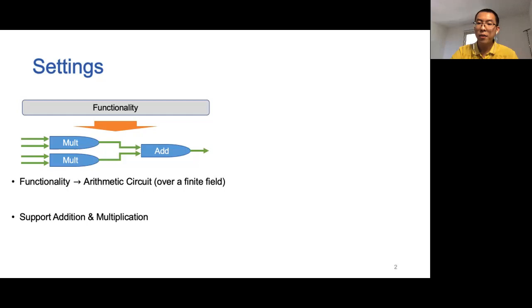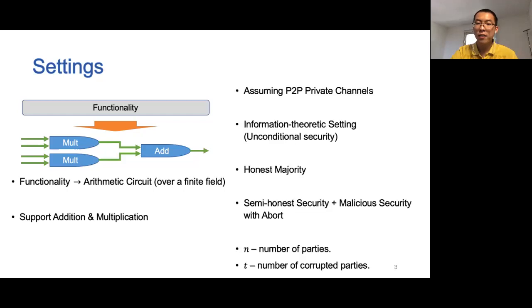The circuit supports addition and multiplication operations. In this work, we focus on the information-theoretic setting with honest majority and assume a P2P channel between every pair of parties. We are interested in both the semi-honest security and the malicious security with abort. We use N for the number of parties and T for the number of corrupted parties.